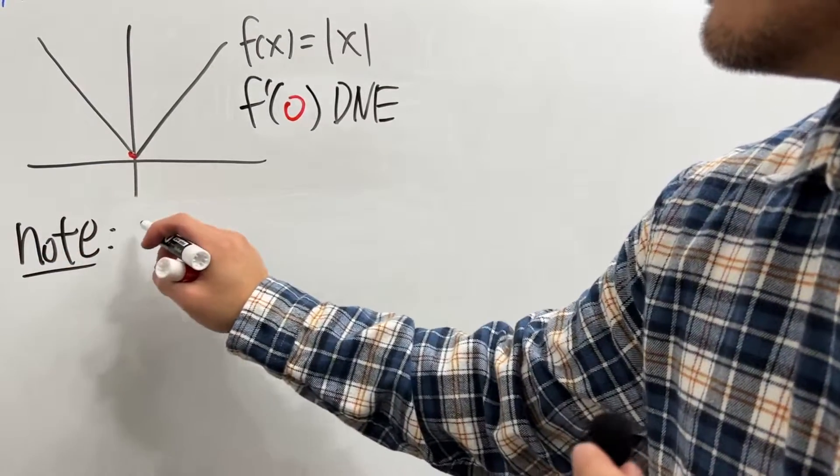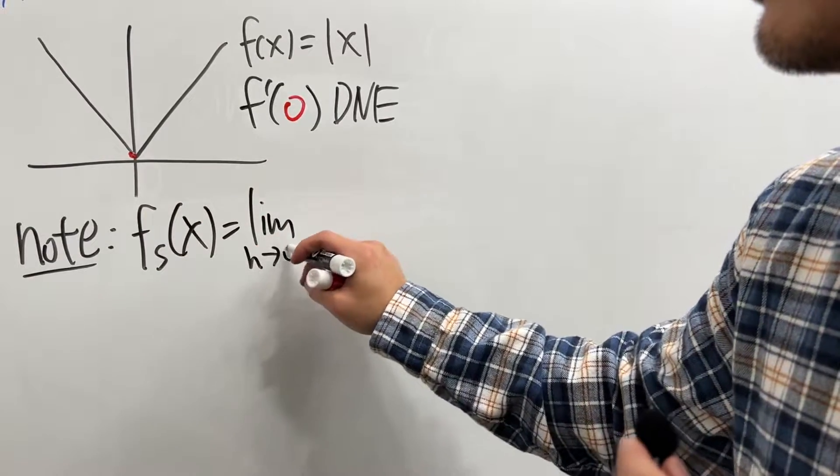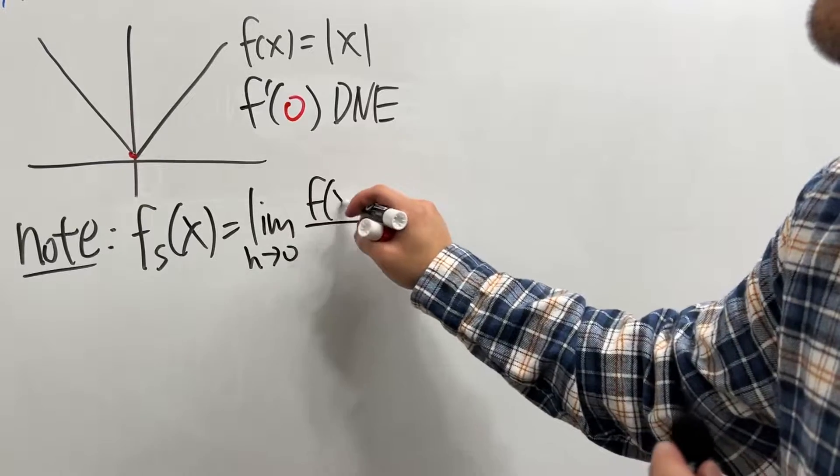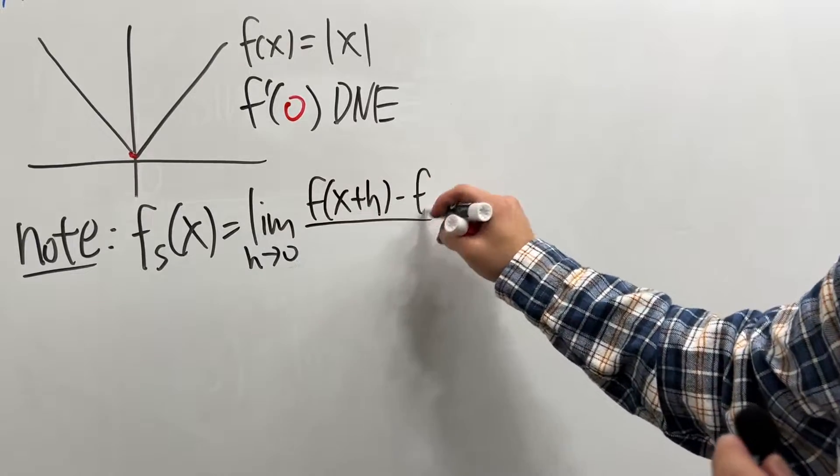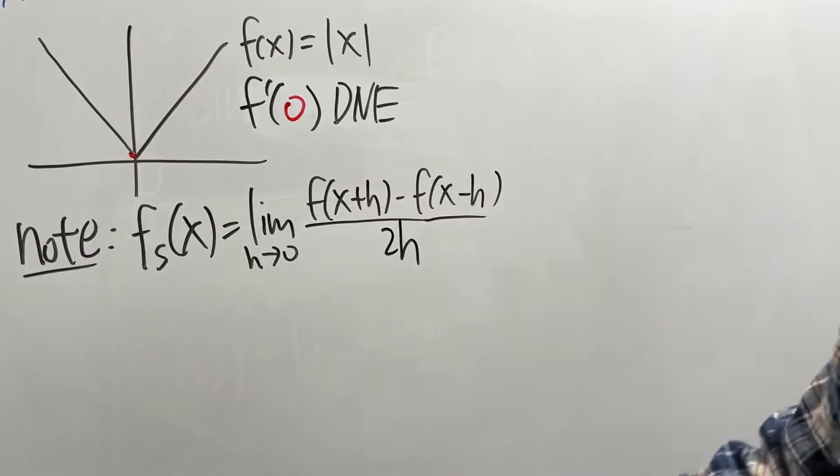Note, the symmetric derivative f_s(x) is equal to the limit as h approaches 0 of [f(x+h) - f(x-h)] over 2h. And you see the difference between this and that's 2h, so divide it by 2h.